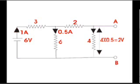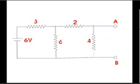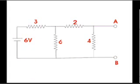Hence the total network can be considered as a single source of 2 volts. For calculating equivalent resistance of the network across the terminal A and B, we have to first replace the voltage source in the network by its internal resistance. Here in this example, the only voltage source of 6 volts is taken as ideal, so we will replace it by a short circuit.